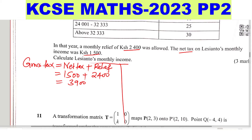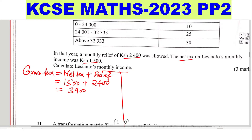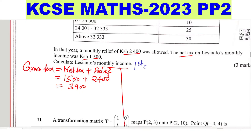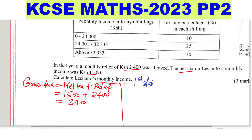Now we need to get the amount of income that produces this gross tax of 3,900. Let's go to the slabs. The first slab covers income from 0 to 24,000, so the size of that slab is 24,000. We multiply by the rate of 10%, and you get a tax of 2,400. So in the first slab, the income is 24,000 and the tax obtained is 2,400.